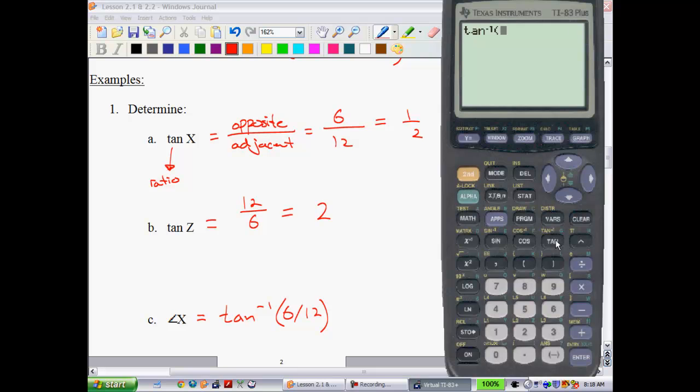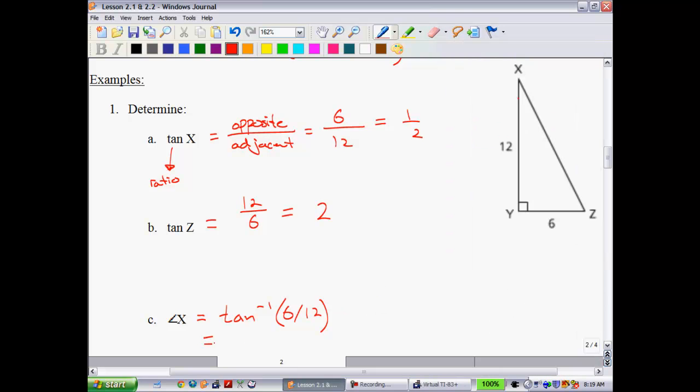So now we're going to try it again. Second, inverse. So now we're dealing with the tangent inverse. We go 6 divided by 12. What we found out is we found out that that angle x, that mystery angle, is 26.56 degrees. We're going to round it to the nearest degree and say that that's equal to approximately 27 degrees.